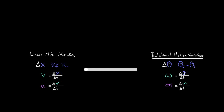Similarly, angular velocity was the angular displacement per time, just like velocity was the regular displacement over time. And angular acceleration was the change in angular velocity per time, just like regular acceleration was the change in regular velocity per time. Because these definitions are exactly the same — except the linear motion variable is replaced with its angular counterpart — all the equations, results, and principles we derived for linear motion will also hold true for rotational motion, as long as you replace each linear variable with its rotational counterpart.